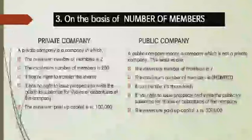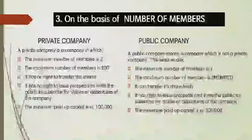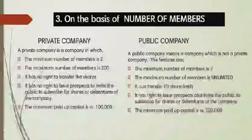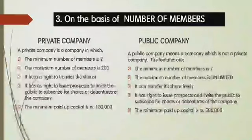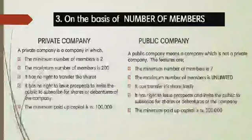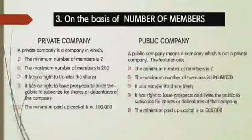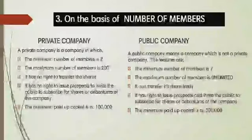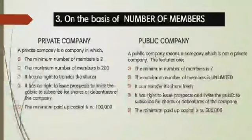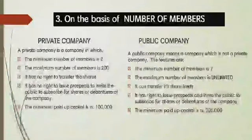The next classification is on the basis of number of members. We can classify into two types: private company and public company. A private company is formed with friends, relatives, and known persons — you cannot call the public to buy shares. The main features of a private company: minimum members is 2, maximum is 200, members cannot transfer shares freely, and the company cannot issue a prospectus to the public.